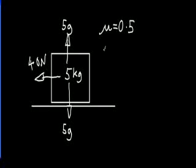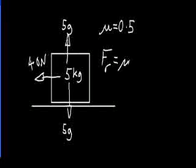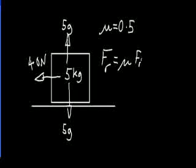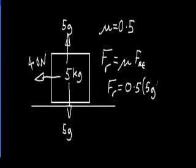Frictional resistance, FR, is equal to mu times the reaction. So in this case, FR is equal to 0.5 times 5g. And that will give you your result for your frictional resistance.